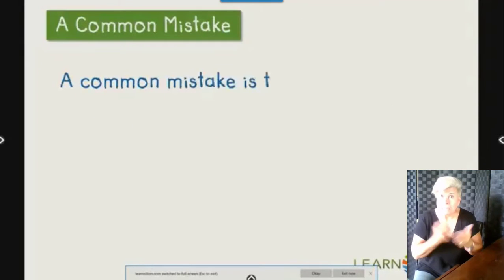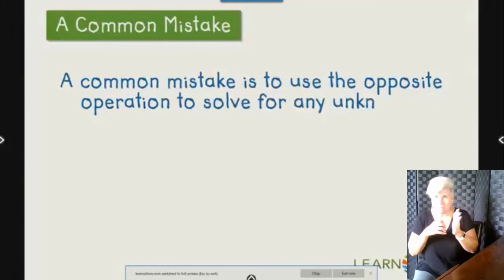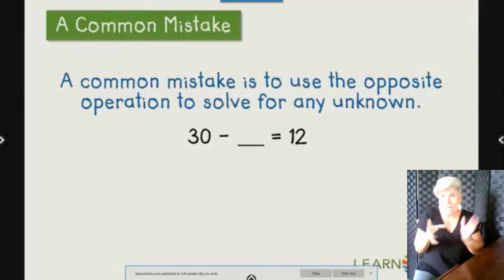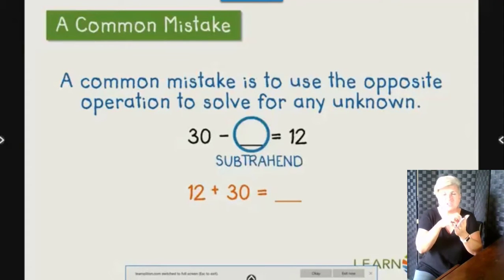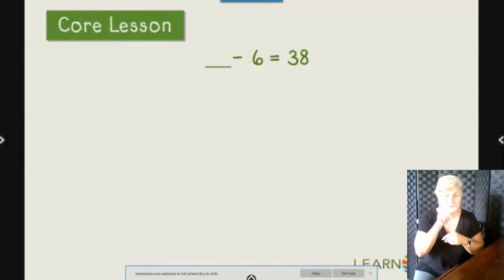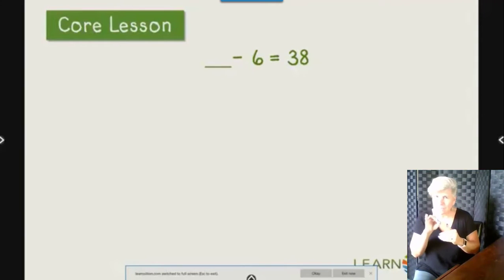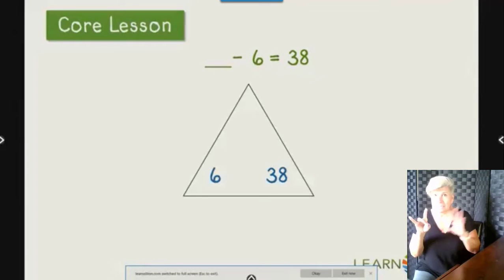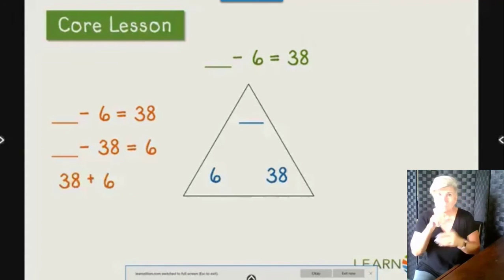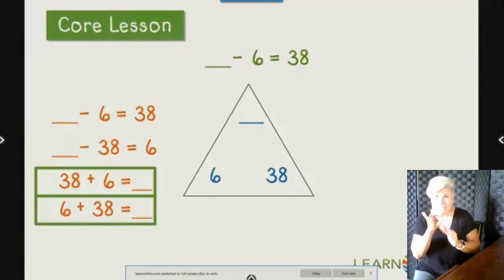A common mistake is to use the opposite operation to solve for any unknown. For example, if you have 30 minus blank equals 12, you may think you just need to add 12 plus 30 to get your unknown. However, when what is missing is the smaller number in subtraction — the subtrahend — you must set up another subtraction problem: 30 minus 12 gives you the correct answer. When the sum is the unknown, such as blank minus 6 equals 38, create a fact family triangle and write out your four equations. 38 plus 6 equals our unknown, so 38 plus 6 equals 44, and that is our unknown sum.